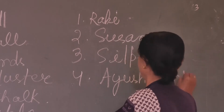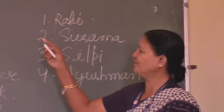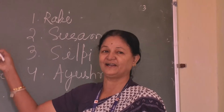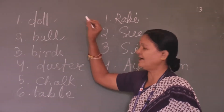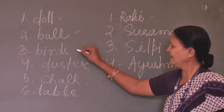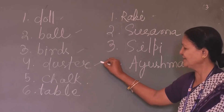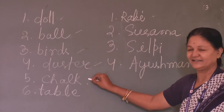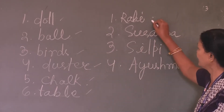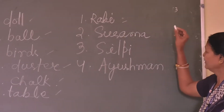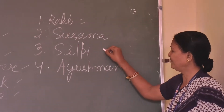Now I am reading and you also do the reading with me: doll, ball, birds, duster, chalk, table, Rabbi, Sushma, Silpi.